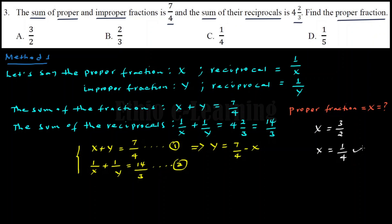So the answer: the proper fraction is x equals 1 over 4, and the improper fraction is y equals 3 over 2. Since 3 over 2 has numerator greater than denominator, it is an improper fraction. This confirms our solution is correct.